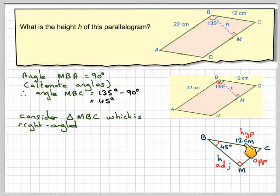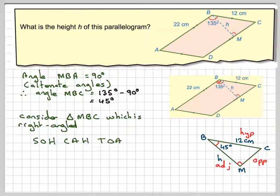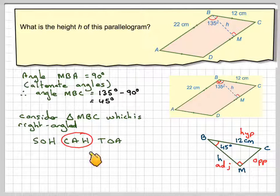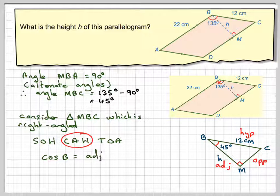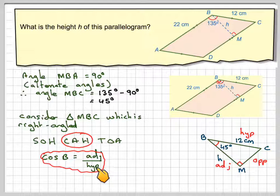I've got the adjacent, hypotenuse, and I've got the angle. So using SOHCAHTOA, we're going to need to use cosine. Write down the ratio. Cos B is adjacent over hypotenuse.